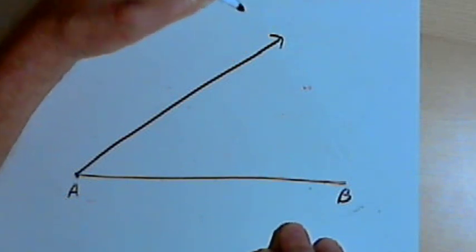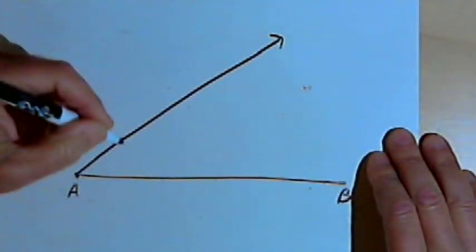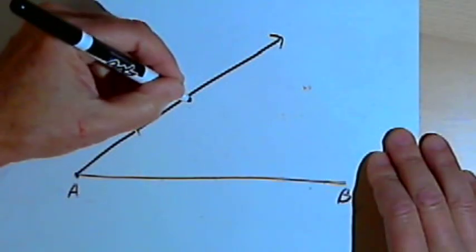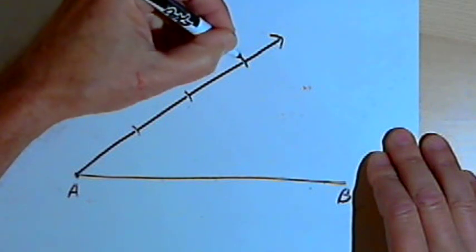The ray can be at any angle I want. I'm then going to divide the ray into, let's say, three equal segments.